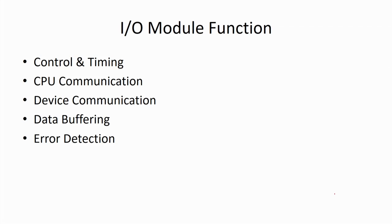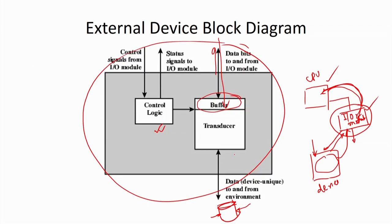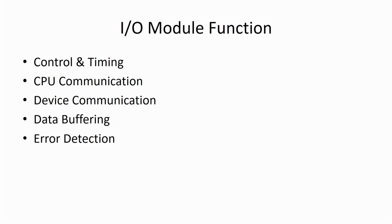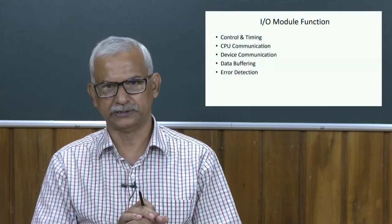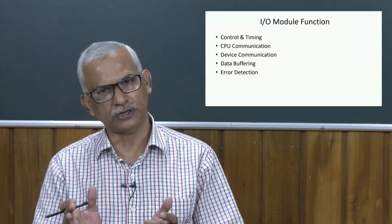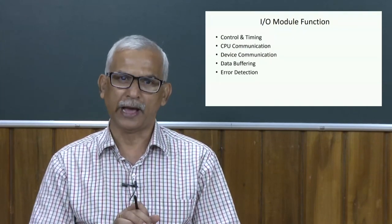In summary, the I/O module functions include: control and timing — generating timing signals and appropriate control signals to synchronize operation since devices are much slower than the processor; CPU communication — communication to the CPU is done through the I/O module; device communication — communication between the I/O module and devices; and data buffering — since devices work at different speeds, the I/O module buffers information, collecting it from input devices before transferring to the processor.